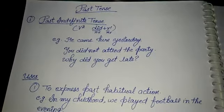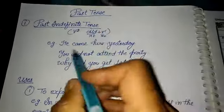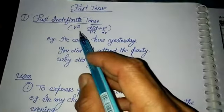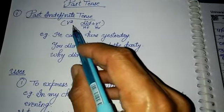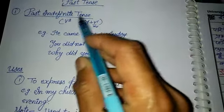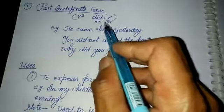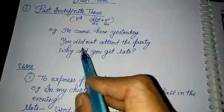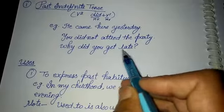Let's start with past tense — specifically Past Indefinite Tense, also called Simple Past Tense. Its structure uses the verb's second form, or 'did plus first form.' With 'did,' we always use the first form of the verb; 'did' is used here as a helping verb. For example: 'He came here yesterday.' 'You did not attend the party.' 'Why did you get late?'